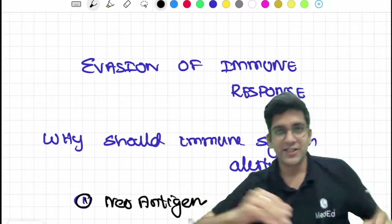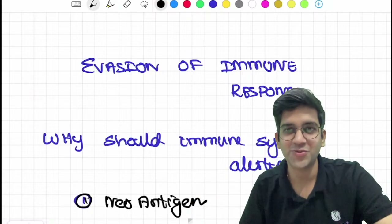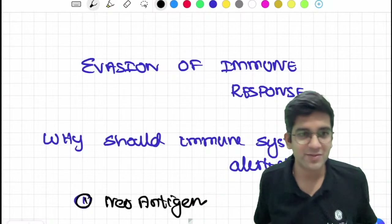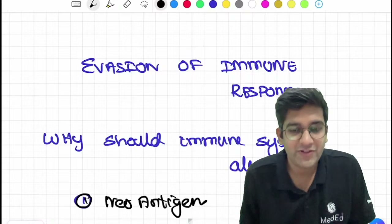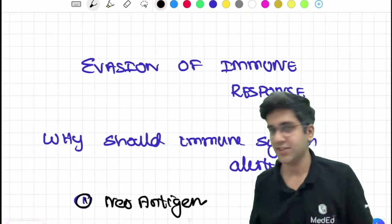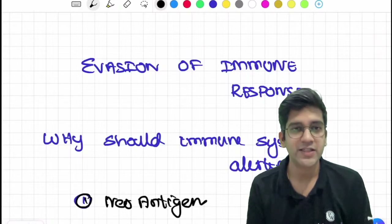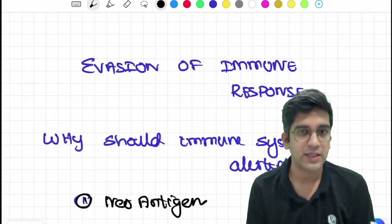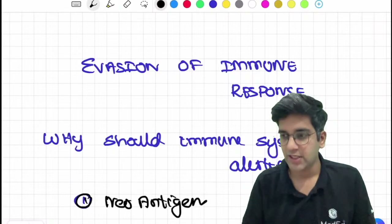Hello guys, I am audible and visible. Very good evening once again. We will continue with the RRR series. We are still in the Neoplasia chapter, and I will be talking about evasion of immune response today.